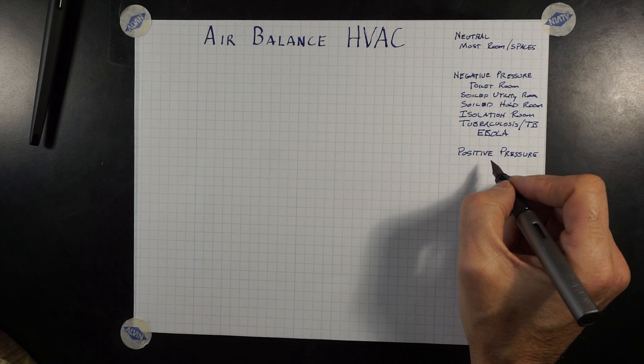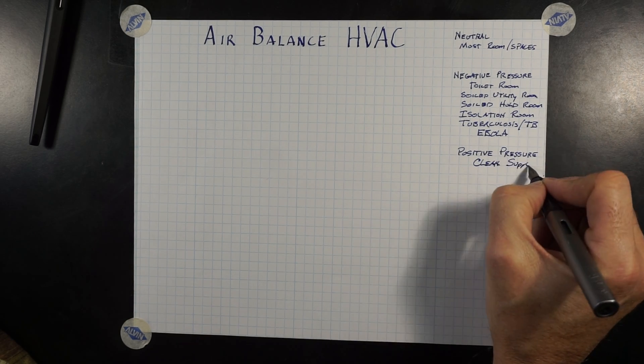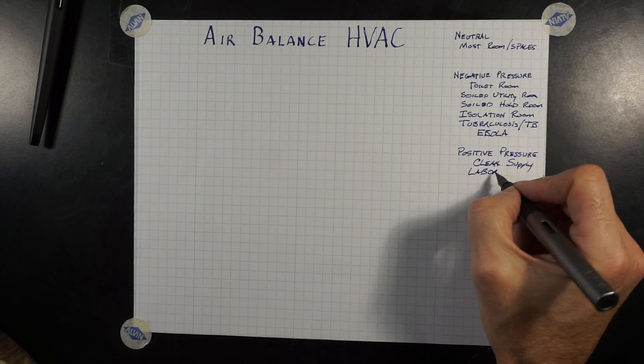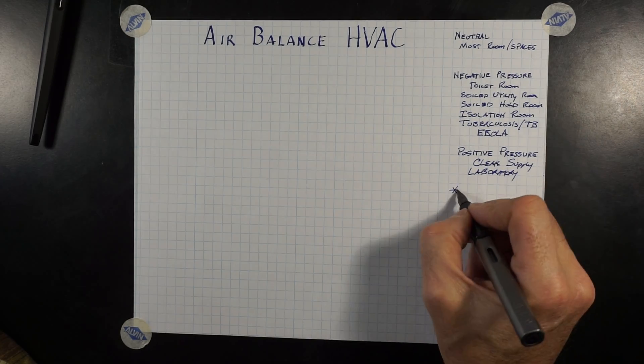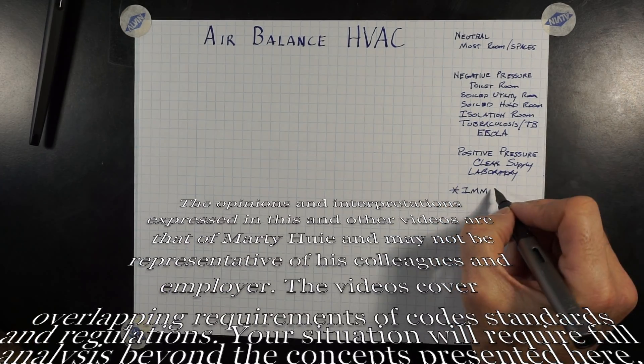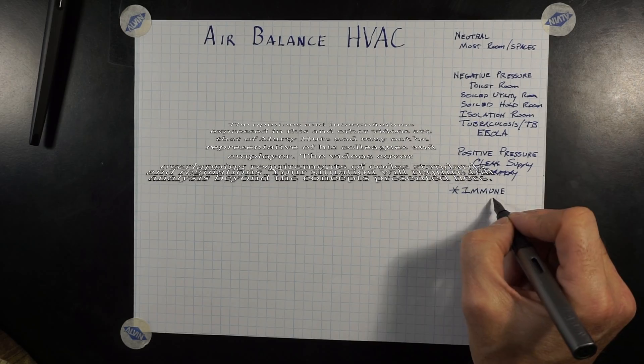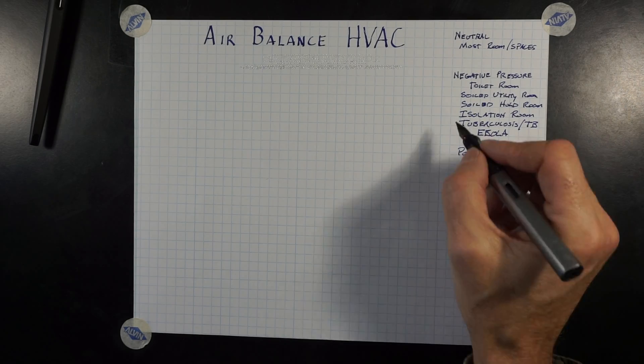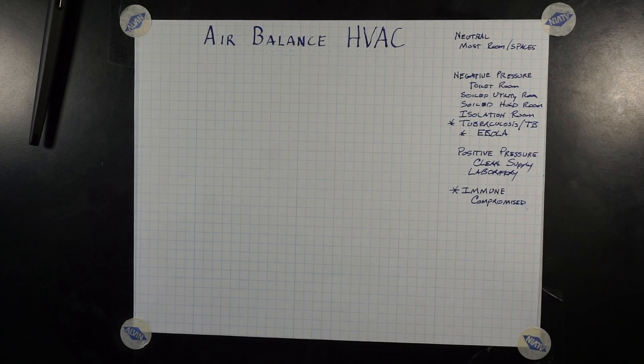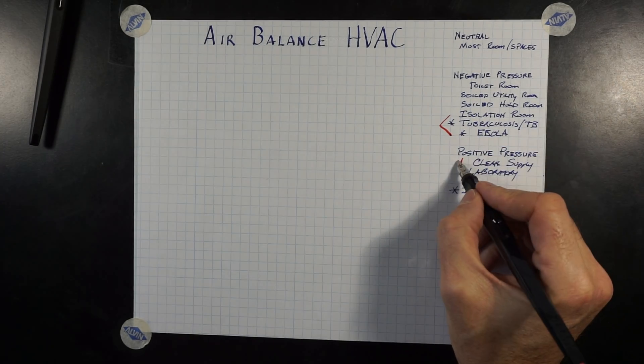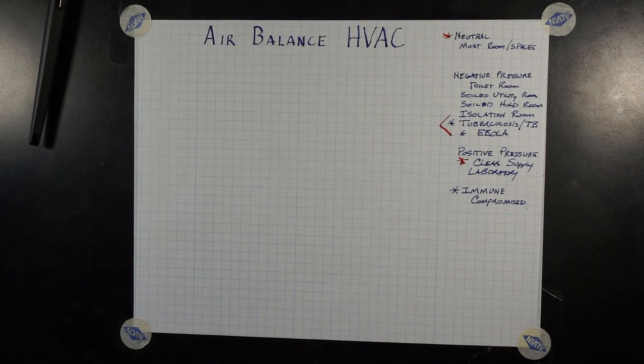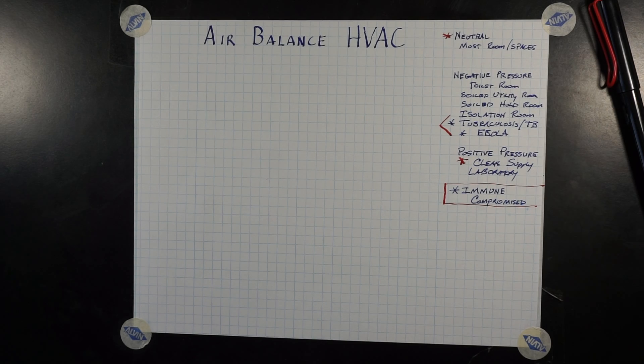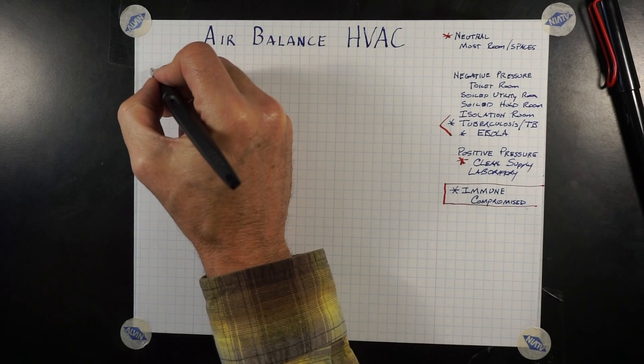With positive pressure isolation rooms, that's not a code requirement that we have to follow. We might have to design to one due to the fact that we might have an immune-compromised patient, such as a cancer patient. Otherwise, our positive pressure rooms are used for clean supply rooms or laboratories. With immune-compromised, we're strictly looking at cancer patients or other patients where they could easily catch a cold or a flu.